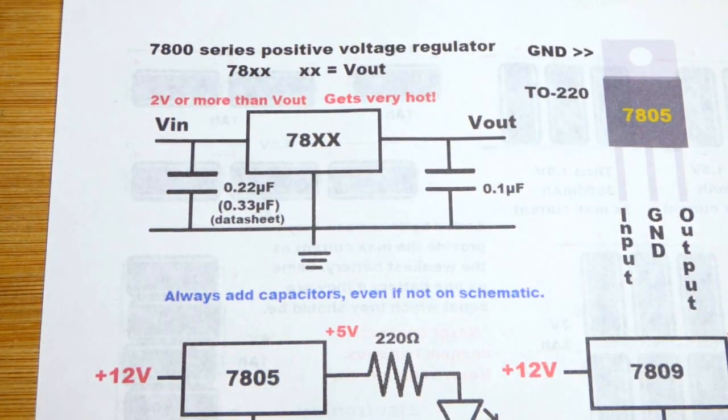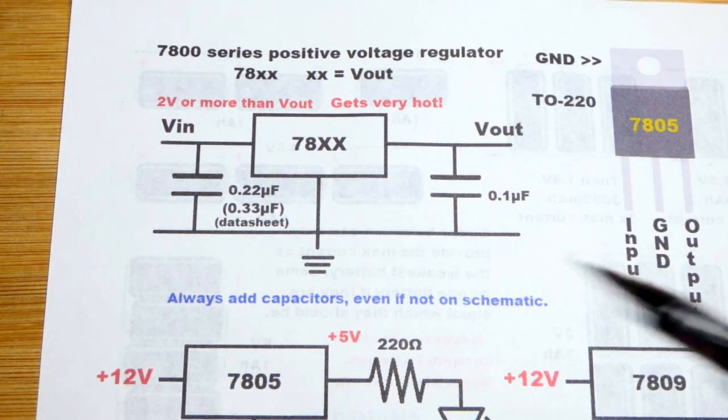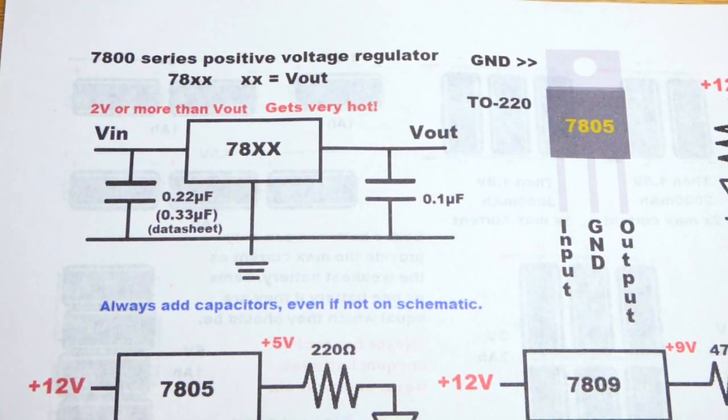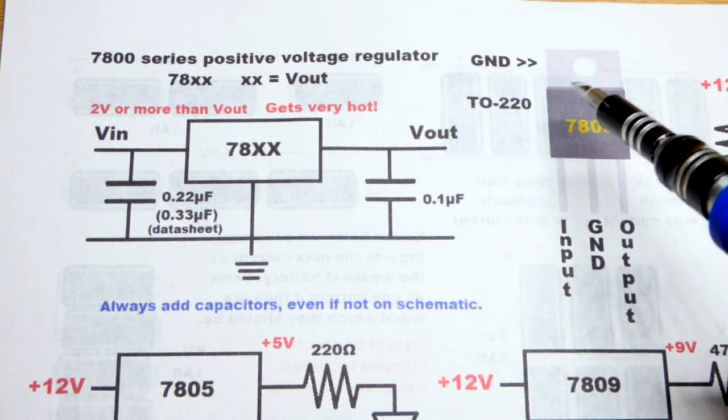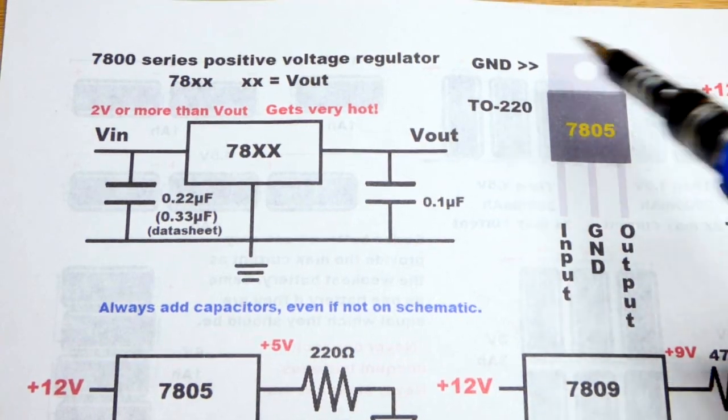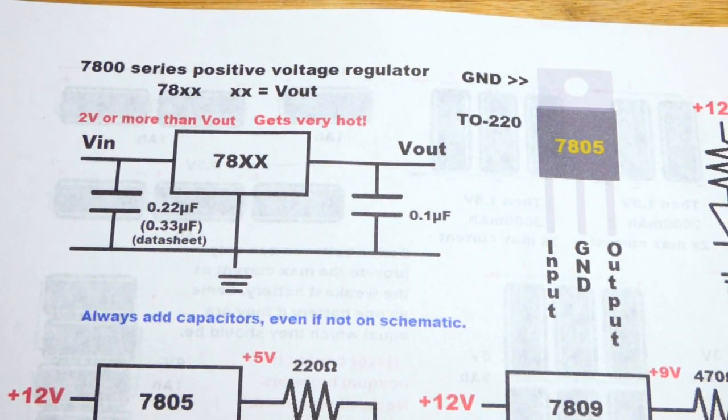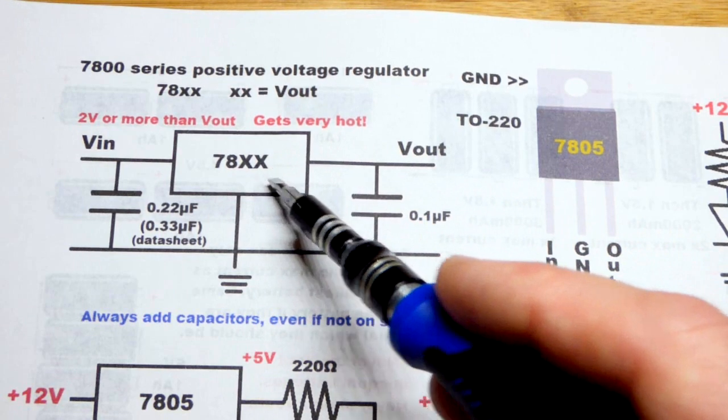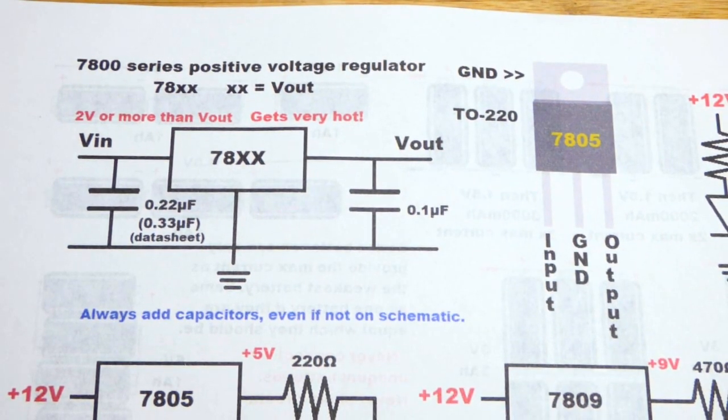Now these do get really hot. That's why we have the metal tab. If you need to reduce the heat more, they protect themselves by limiting current. If you're getting less current and thus voltage than you expect, add a heat sink, that will probably fix it. Luckily it probably won't damage the component. They seem to just limit current as needed to protect themselves.